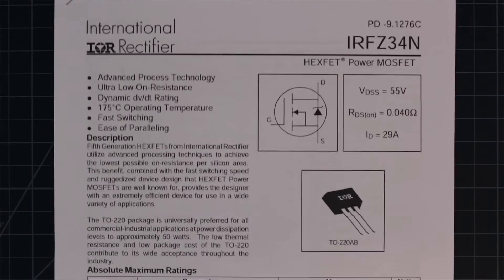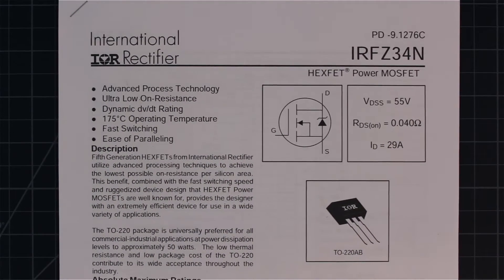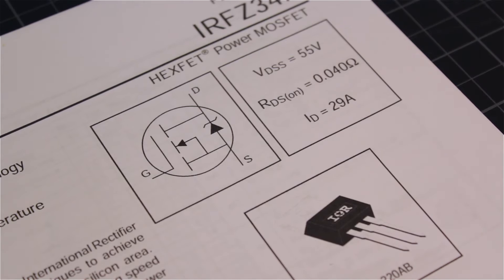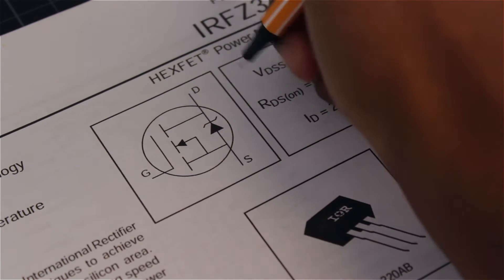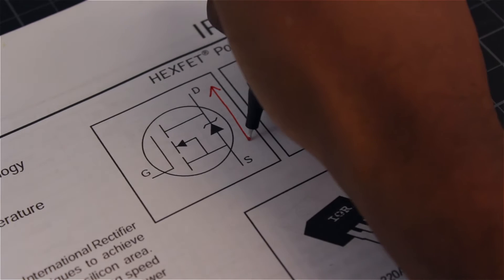Well, the best place to learn about a chip is to look at the datasheet. Up at the top, we can see the symbol for our MOSFET. Take a look at this diode going from the source to the drain. The diode is important because it tells us which way to use our MOSFET.